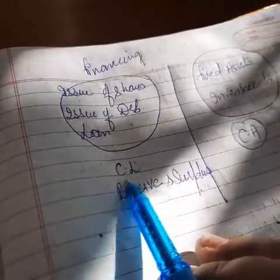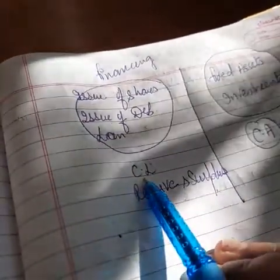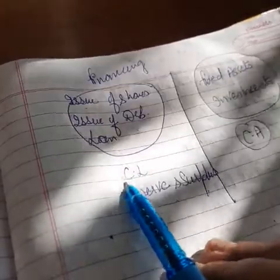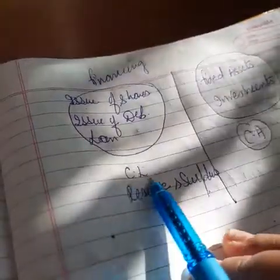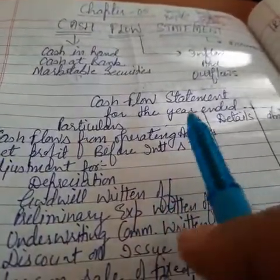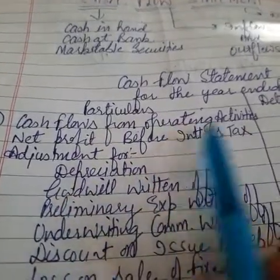Now we have to show the effects of current liabilities, current assets, and reserve and surplus in operating activities. Current liabilities are those liabilities which will be paid off within one year, which means they are part of operations. In operating activities we take all activities related to sales, purchase, manufacturing, and office.